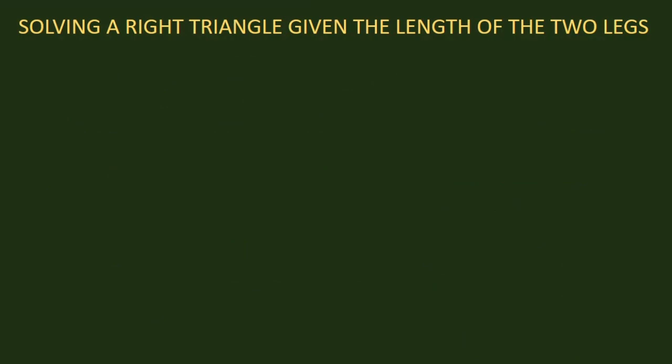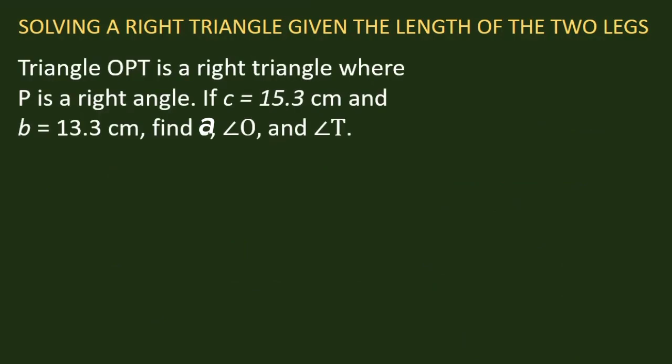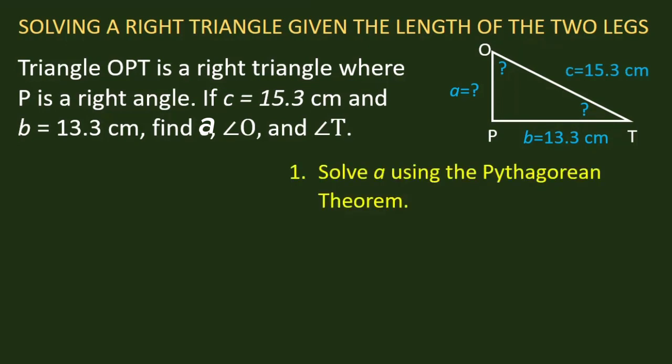Let's have another problem. Triangle OPT is a right triangle where P is a right angle. If c = 15.3 centimeters and b = 13.3 centimeters, find a, angle O, and angle T. We have the triangle at the right. We label the given sides. The unknown side is a. We solve this using the Pythagorean theorem.